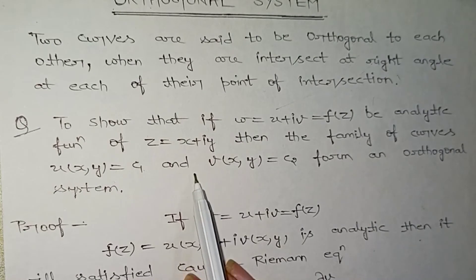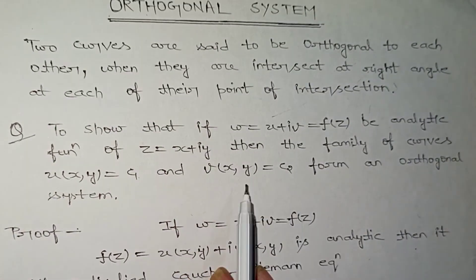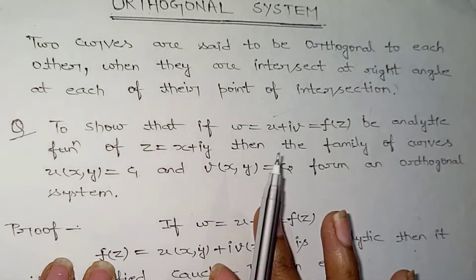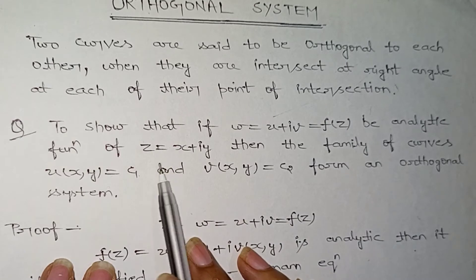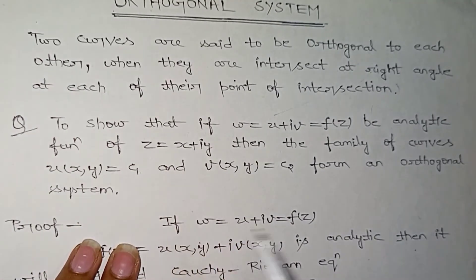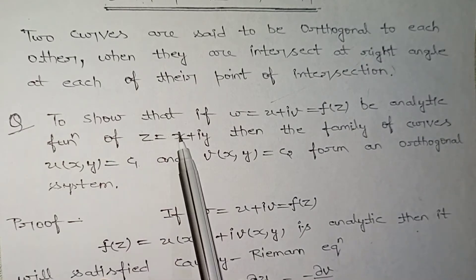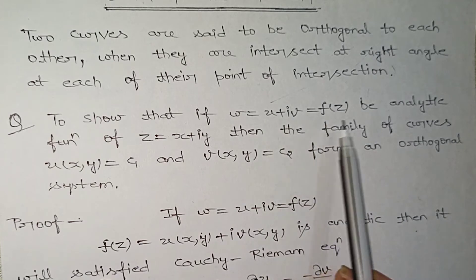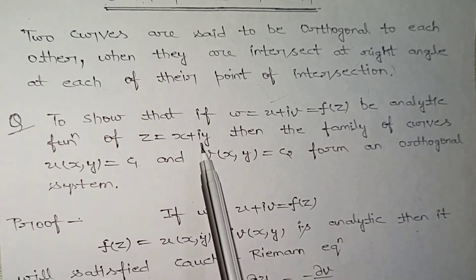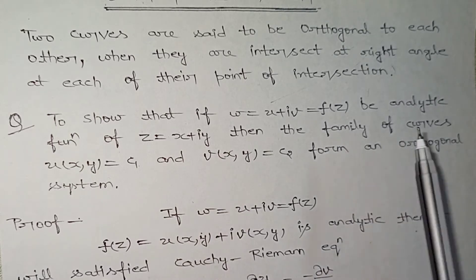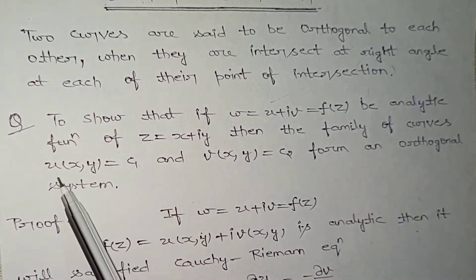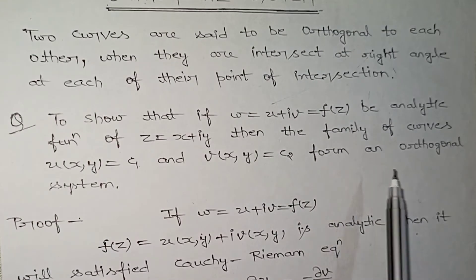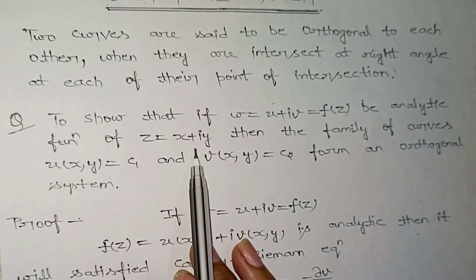We always ask these types of questions. I have seen them in previous years' question papers. Whenever you are asked about the Orthogonal System, you can expect questions like this. The question is stated as: To show that if w = u + iv = f(z) is an analytic function of z = x + iy, then the family of curves u(x,y) = c₁ and v(x,y) = c₂ form an Orthogonal System.